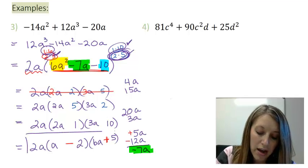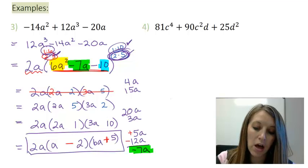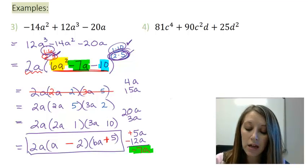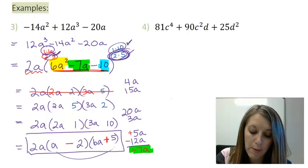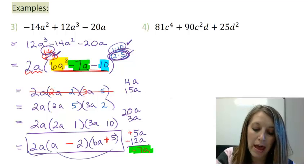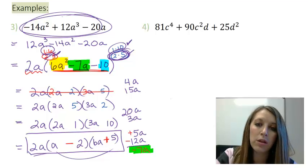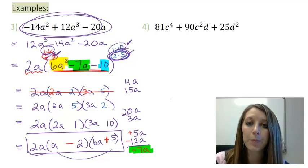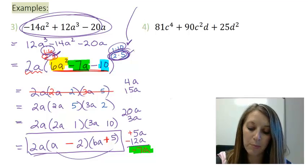Now, if you're not ever very confident with yourself, you can do this by checking it. So I would re-foil these back out, distribute my 2a, and make sure you end up with the original problem that you had. All right, so we finished example 3. So let's move over to example 4.